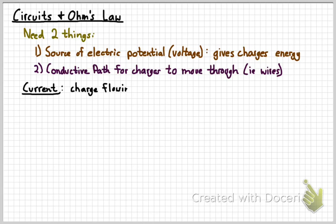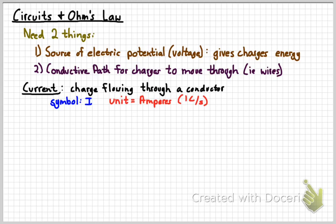A current is simply the charge flowing through those wires, through any conductor. We use the symbol I for current, and the unit that we use to measure it is the ampere. An ampere is a Coulomb per second.